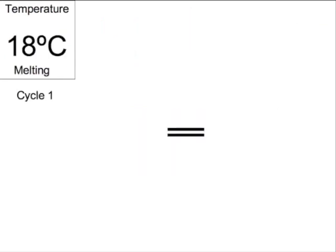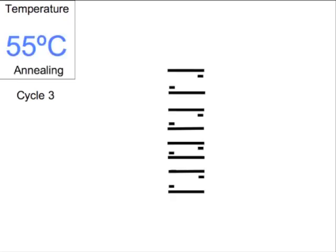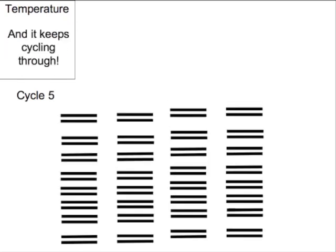So this process can be repeated over and over again. Here we've zoomed out with each line now representing a single strand of DNA. As we go through the multiple cycles we increase the total number of DNA molecules by a factor of two each round. So with every round we get more and more DNA copies of our target.